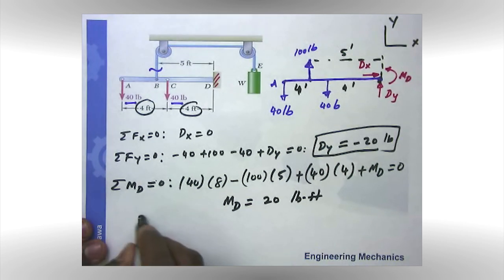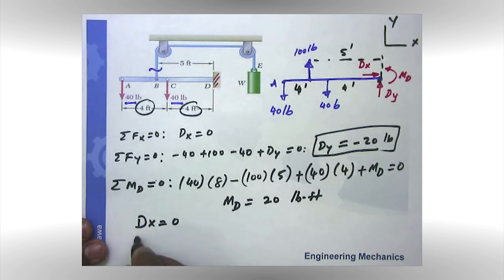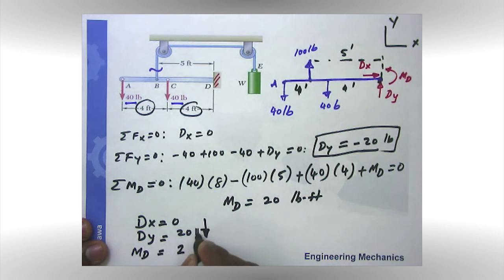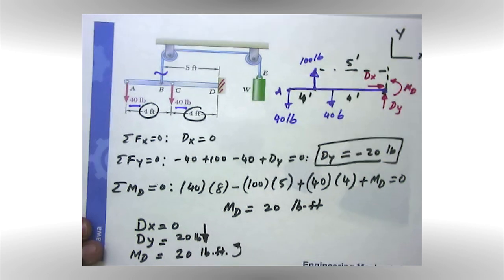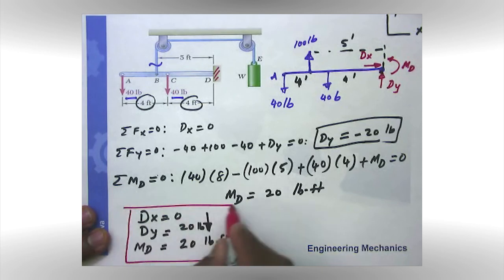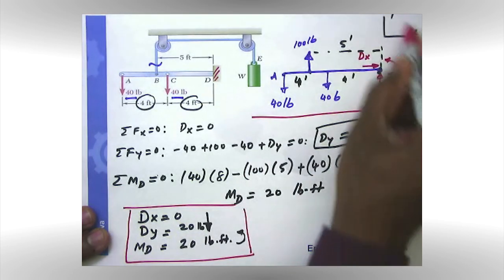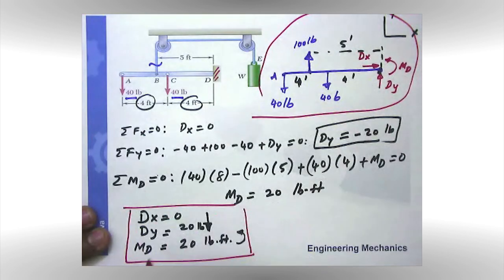So the final answer, D_x equal to zero, D_y equal to 20 pounds, but going down along negative y direction. And finally, moment, the unknown moment that we now calculated is, by the way, don't forget the units, please. 20 pound foot counterclockwise. And that's my answer to this problem. Again, I have a nice free body diagram, I have my equations, and I have my answer. This completes the solution to this problem.